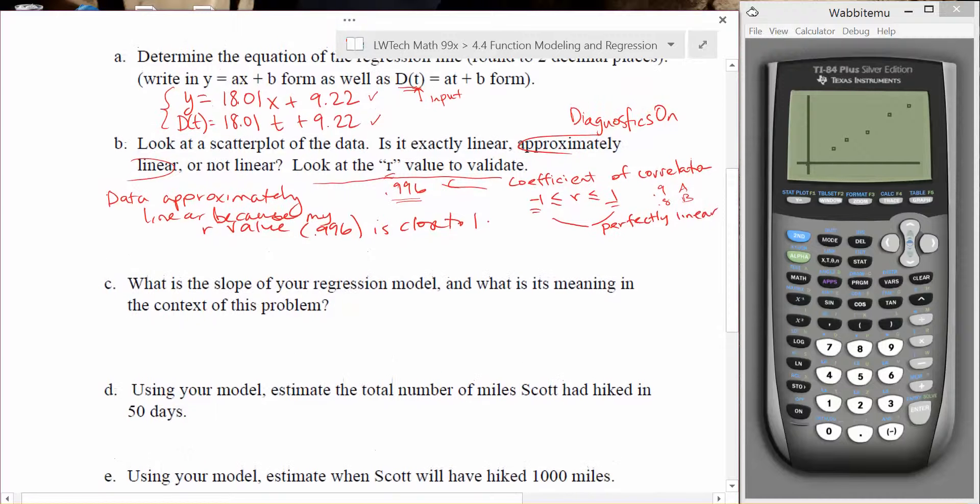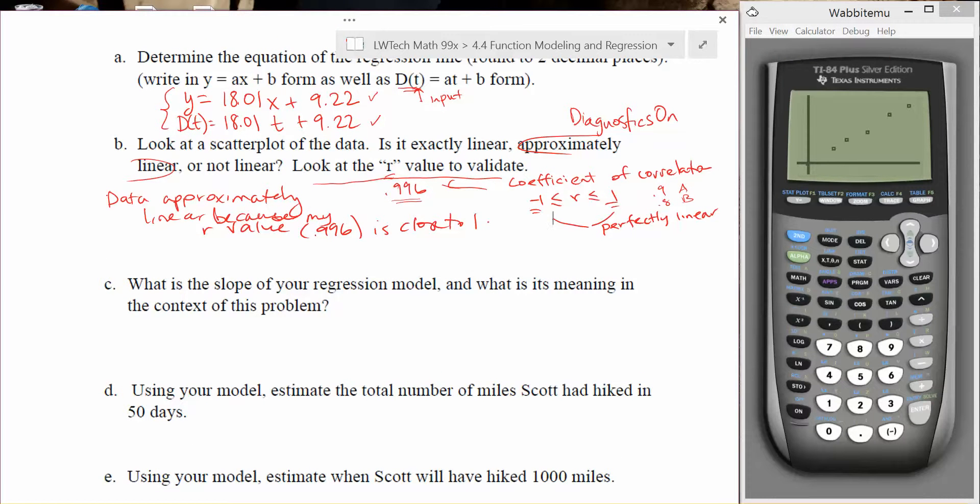Now the next question that our problem is asking us is to look at and identify important pieces of information. This one is asking us to identify the slope of our regression model and identify its meaning in the context of the problem. In this case, our slope is always the number that's in front of our input variable. So in this case, our slope is 18.01.